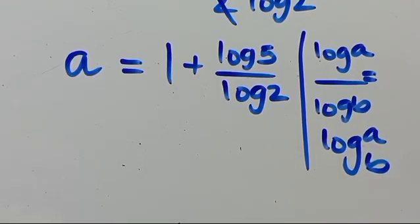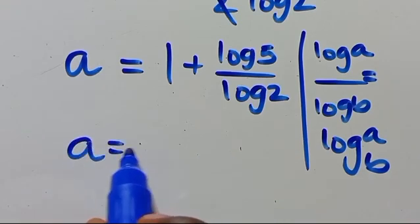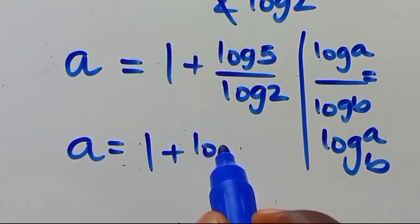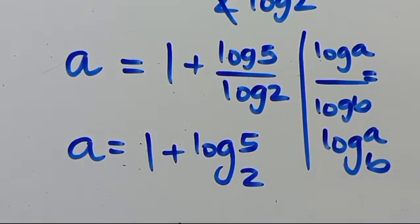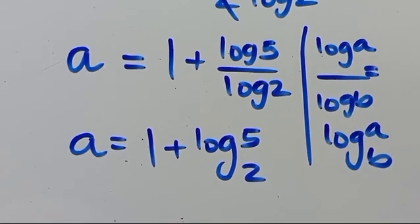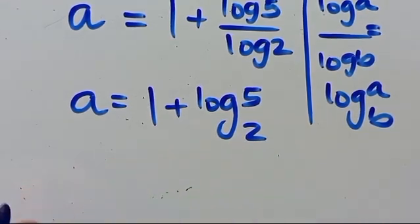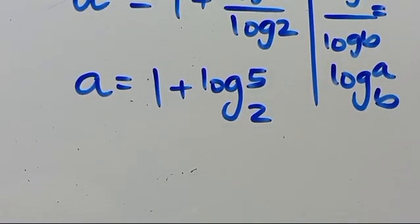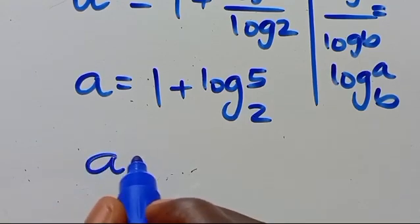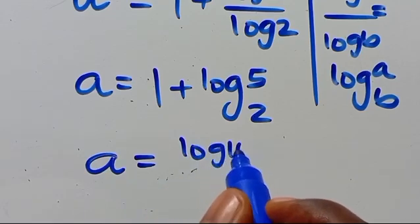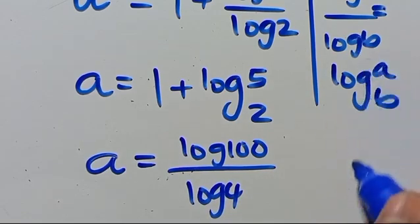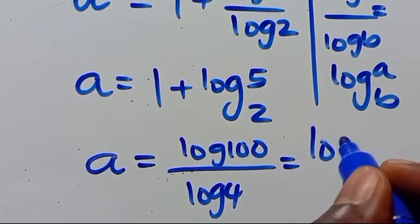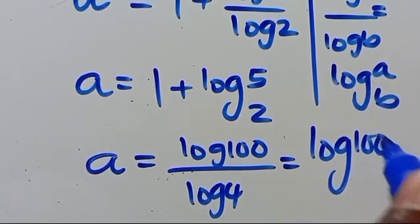Recalling that log A over log B equals log A in base B, we have a equals 1 plus log 5 in base 2. This is also the same as a equals log 100 over log 4, which by the change of base rule equals log 100 in base 4.